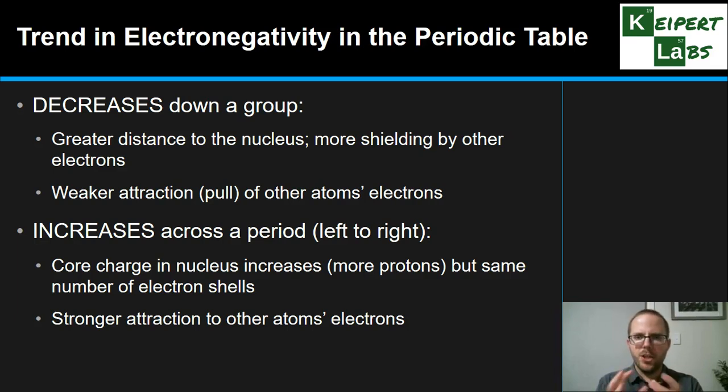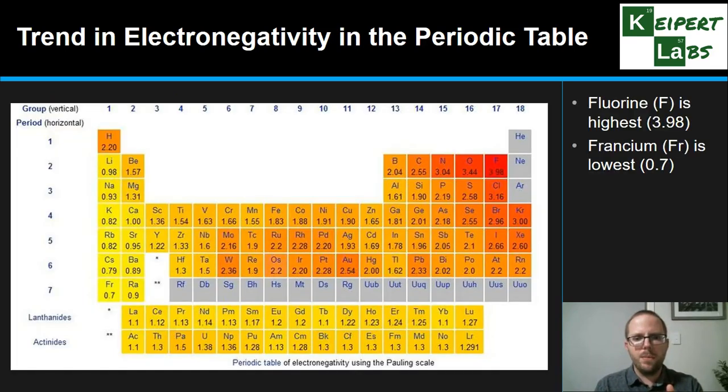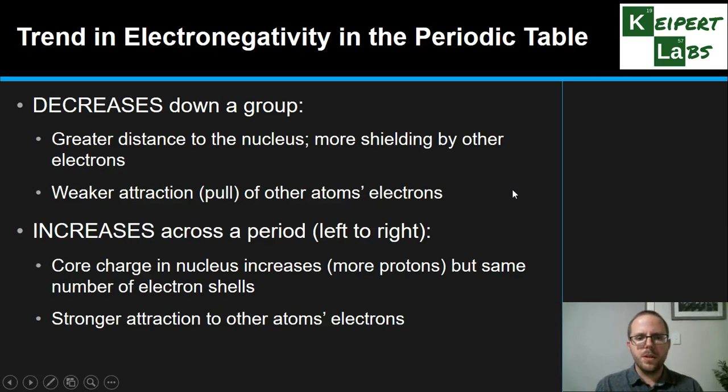Fluorine has the magic combination of these two things. It's got a really strong core charge for its size. We've only got a very small number of shells, so the distance of another atom's electrons from the nucleus of the fluorine is not very high. The attraction is really strong. As we get further down in that area of the periodic table, as we get further down, we've added in more and more shells, so that shielding effect starts to really make a difference. But when we're in this corner, we've got that real combination of those things.